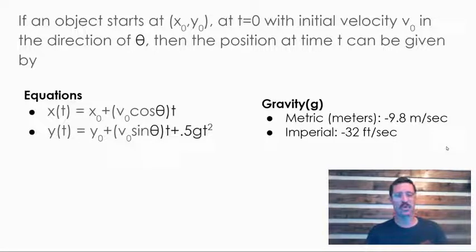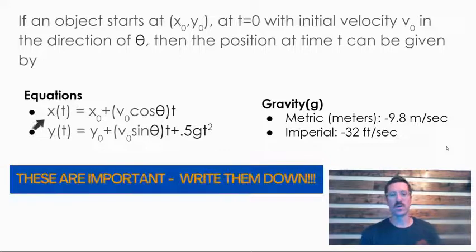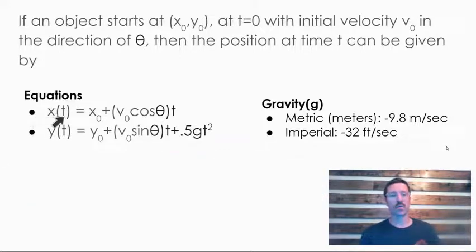For parametric equations with projectile motion, these are the two equations that we need to know, so put these in your notes. We need to memorize these. To find our horizontal movement, we take our initial position, we could read this as x naught or x initial, plus the velocity that our object is fired, we can call that v naught or v initial, times cosine of the angle, and then there's our parameter t.